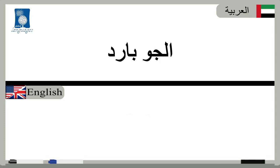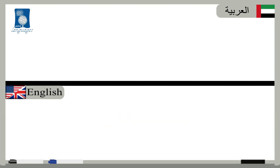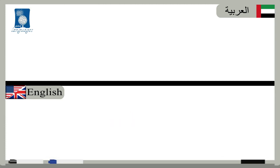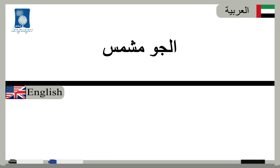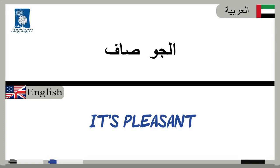الجو بارد — It is cold. إنها تمطر — It is raining. الجو عاصف — It is windy. الجو دافئ — It is warm. الجو مشمس — It is sunny. الجو صاف — It is pleasant.